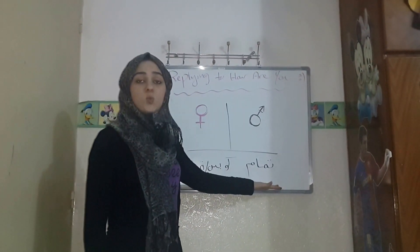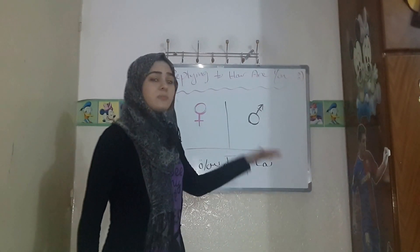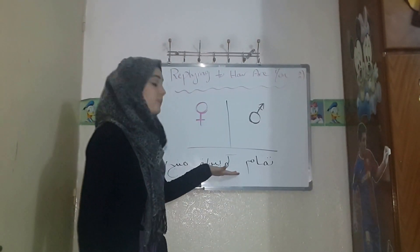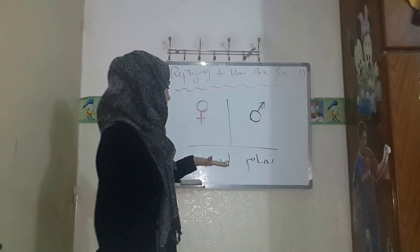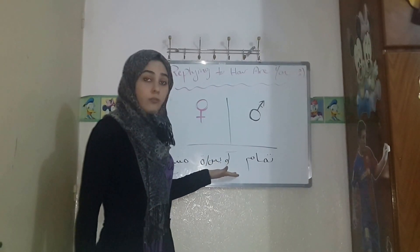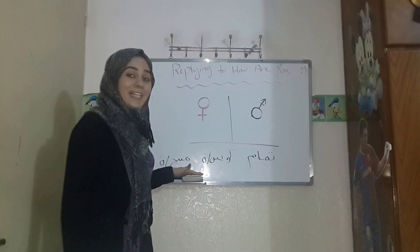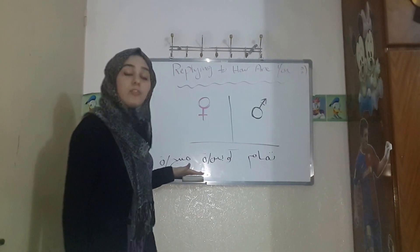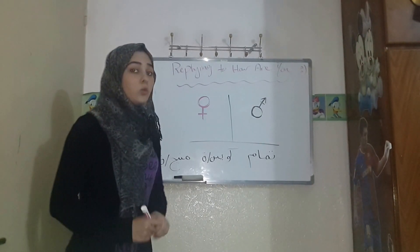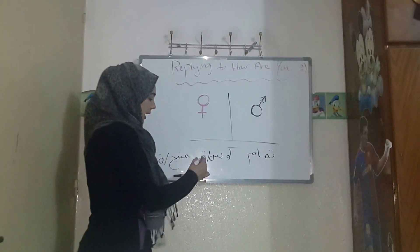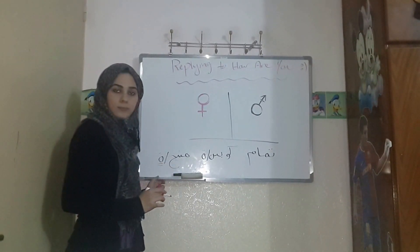The first way is تمام, which works for both male and female. The second way is كوائيس for a male, meaning 'good,' or كوائيسة for a female, also meaning 'good.' The same pattern goes for نيح for a male or نيحة for a female. So you can infer the rule: you add that feminine sound for the female form.